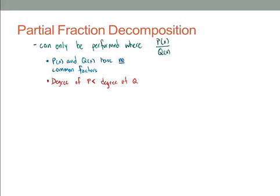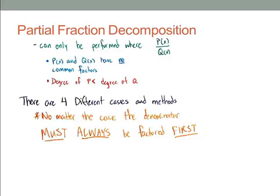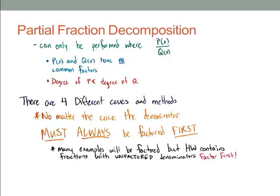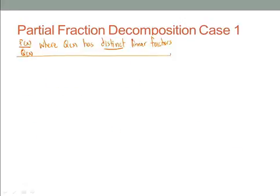There are four different cases and methods. The method is pretty much similar — it's just in how you set up the partial fraction where they differ. No matter the case, the denominator must always be factored first. The examples in this video are going to be pre-factored for the sake of time, but if you're taking this course the homework contains fractions with unfactored denominators, so you must always factor those first.